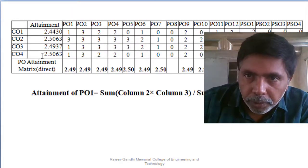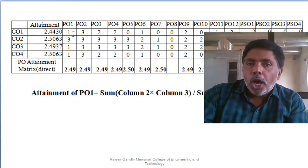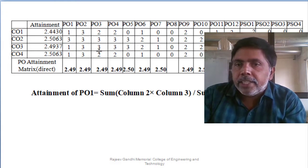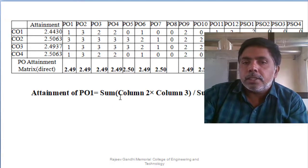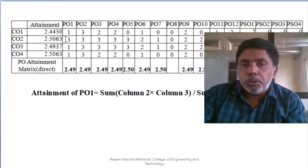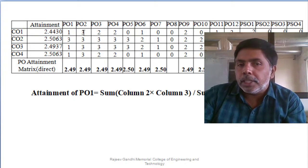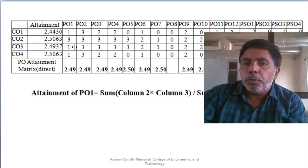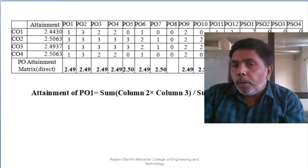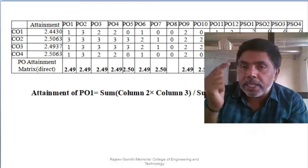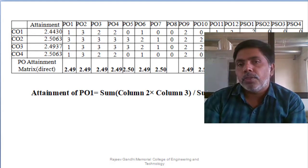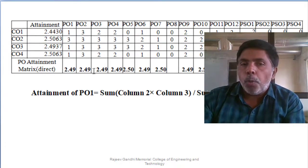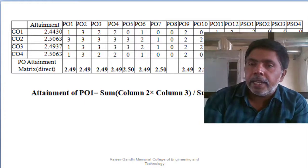Using the CO attainment weightage values, we calculate how many program outcomes are attained. The PO attainment is: sum of (CO mapping value × CO attainment weightage) divided by sum of CO mapping values for that PO. This gives the PO attainment matrix. We are calculating how much of our target was actually achieved.